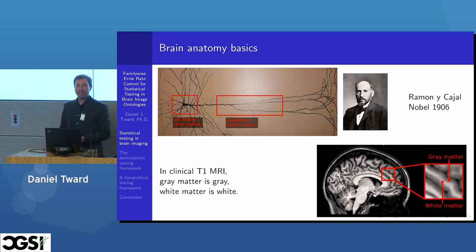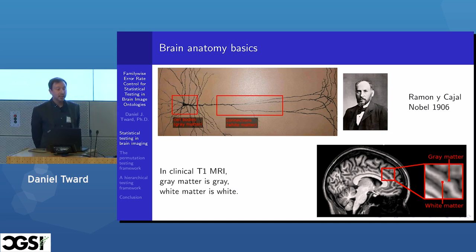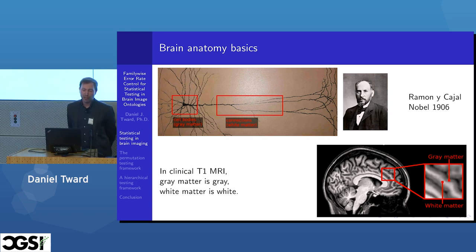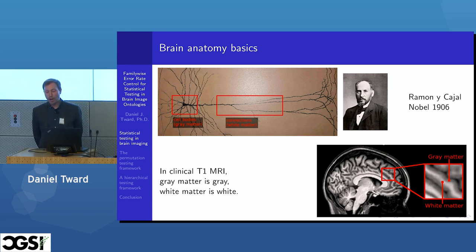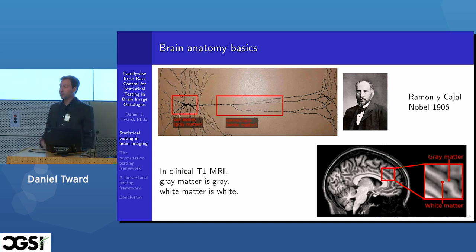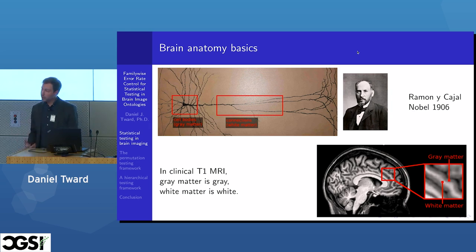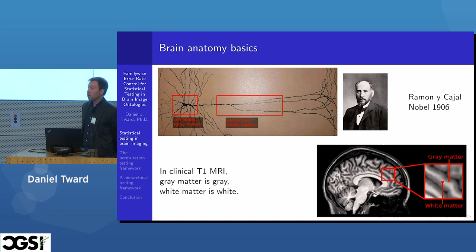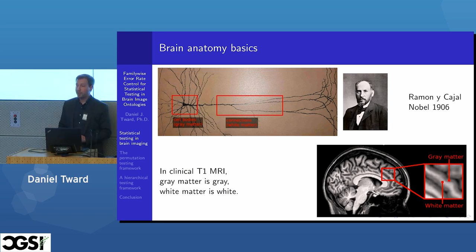The brain consists of many neurons as well as some other cells. At the top left is a picture of a neuron drawn by Ramón y Cajal, who was the first Spanish-speaking person to win the Nobel Prize for work related to this. Neurons consist of two main parts: cell bodies, where the nucleus and all the cellular machinery are located, and long projections which connect one cell to another. The cell bodies are generally called gray matter, and the connections between cells are called white matter. In clinical MRI, the most common type is T1-weighted MRI — easy to remember because gray matter looks gray and white matter looks white.